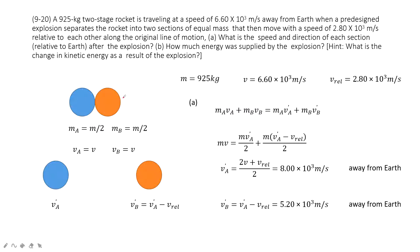At this one, we can see the two-stage rocket. It includes two parts, Ma and Mb. Each part is equal mass. The mass is given.